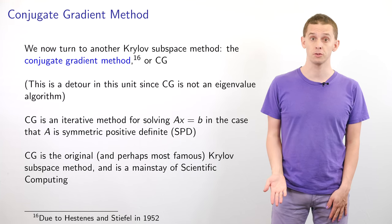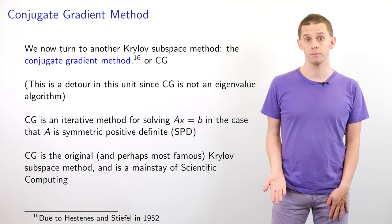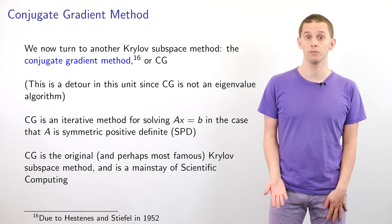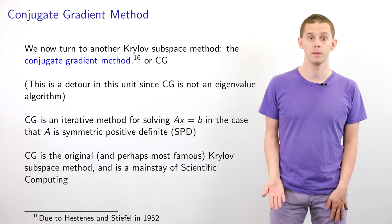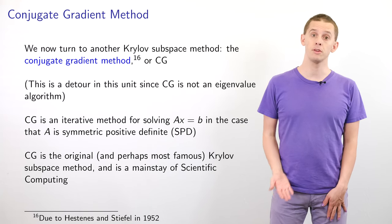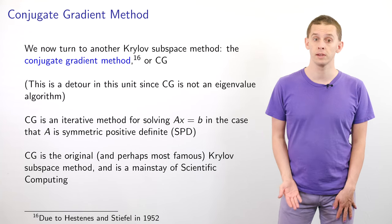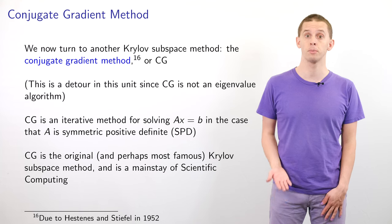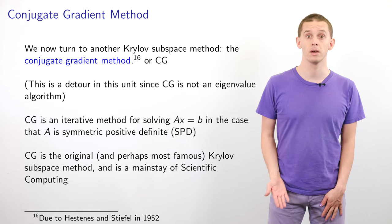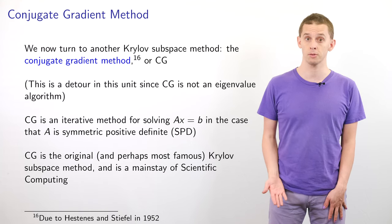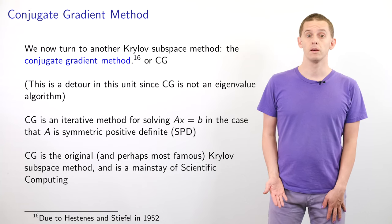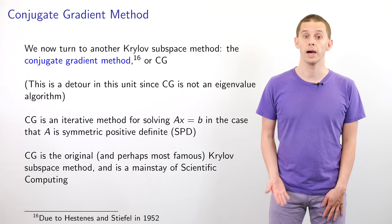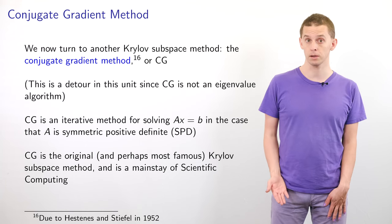We now turn to another Krylov subspace method, the conjugate gradient method, or CG, that was introduced by Hestenes and Stiefel in 1952. CG is an iterative method for solving linear systems Ax = b in the case when A is a symmetric positive definite matrix, often abbreviated as SPD. CG is the original and perhaps most famous Krylov subspace method and it is a mainstay of scientific computing.